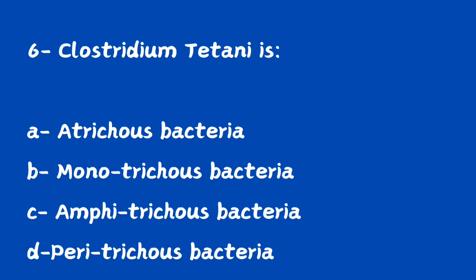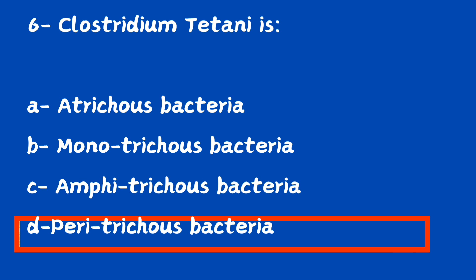Next question. Clostridium tetani is: option A, atrichous bacteria; option B, monotrichous bacteria; option C, amphitrichous bacteria; option D, peritrichous bacteria. The right answer is option D, peritrichous bacteria. Clostridium tetani is a peritrichous bacterium.